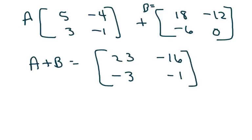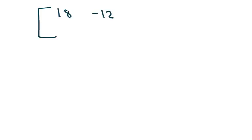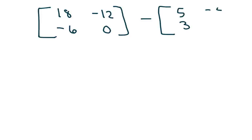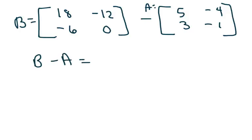The next one is B minus A. B is 18, negative 12, negative 6, 0 and we subtract A which is 5, 3, negative 4, negative 1. So B minus A: 18 minus 5 is 13. Negative 12 minus negative 4 is negative 12 plus 4, which is negative 8. Negative 6 minus 3 is negative 9, and 0 minus negative 1 is positive 1.